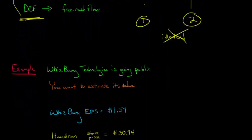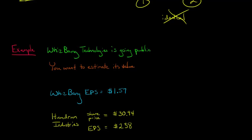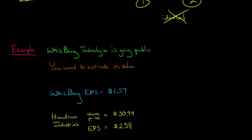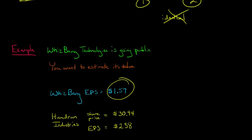We'll talk about the disadvantages and advantages toward the end of the video. Let's get into the example. Let's say you've got Whiz-Bang Technologies. They're going public, so because they're not publicly traded yet, we don't have a stock price to look at. We're trying to estimate Whiz-Bang's value so that we know what's a good price to pay for it. All we know right now is Whiz-Bang's earnings per share is $1.57.